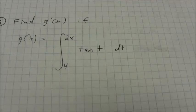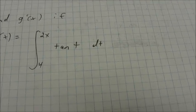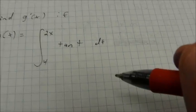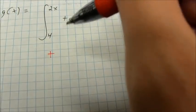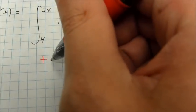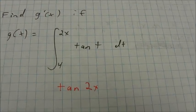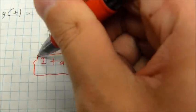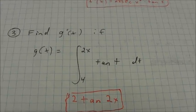Moving on to part G. This is one that's a little bit harder to take the integral of and substitute. But based on the previous problem, we know it's just going to be the derivative — it's going to be the tangent of 2x, but 2x has a derivative of an inside function of 2, so I have to multiply by that. So I get 2 tangent 2x, and that's my final answer there.